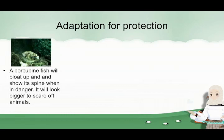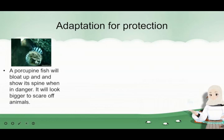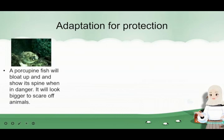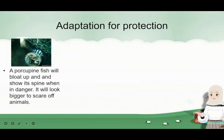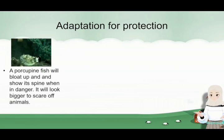For example, a porcupine fish will bloat up and show its spines when it is in danger. It will look bigger to scare off animals. Here you can see it becomes bloaty, it becomes circular. Masa awal-awal, nada nampak ia punya spikes. But as it feels like it's in danger, it becomes round and shows off its spikes.